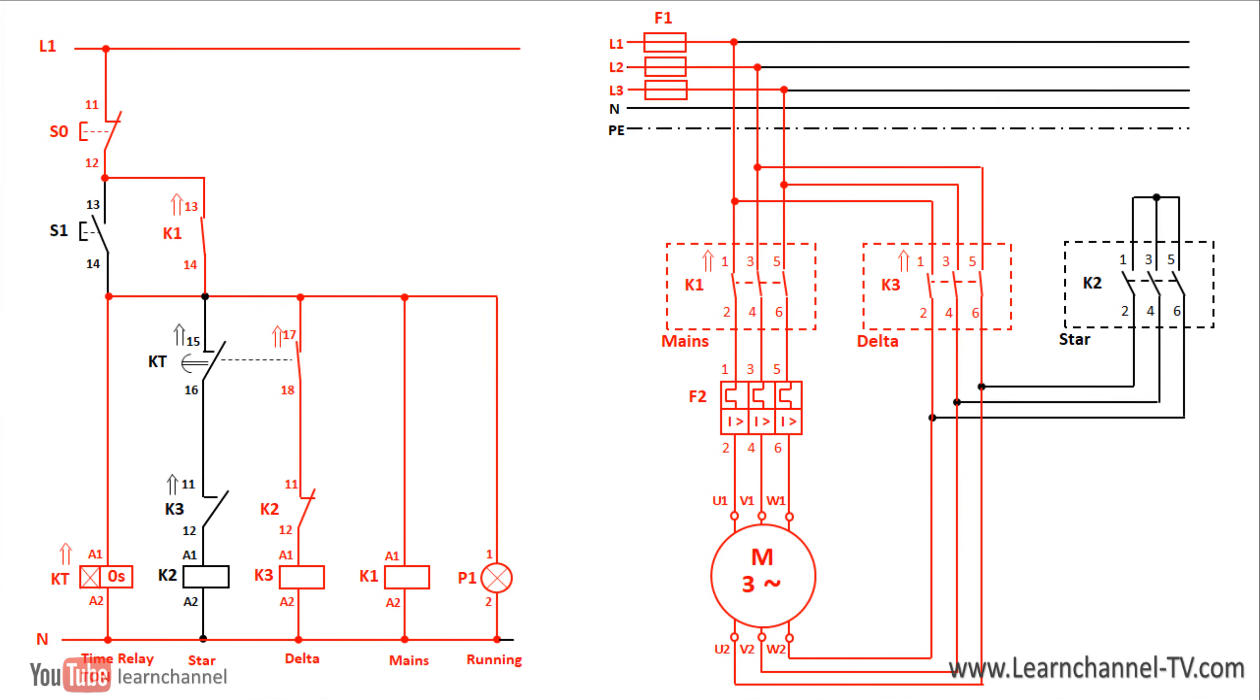At the same time, the on-delay time relay is energized. As soon as a certain time, which can be set at the time relay, has elapsed, the time relay switches. Thus, the star contactor is de-energized and the delta contactor is switched. Small remark: a normally closed contact opens faster than a normally open contact closes.